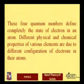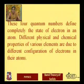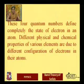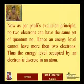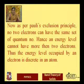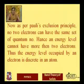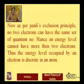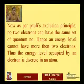Different physical and chemical properties of various elements are due to different configurations of electrons in their atoms. According to Pauli's exclusion principle, no two electrons can have the same set of quantum numbers. Hence an energy level cannot hold more than two electrons, and the energy levels occupied by electrons in an atom are discrete.